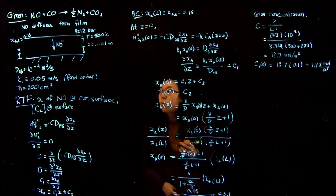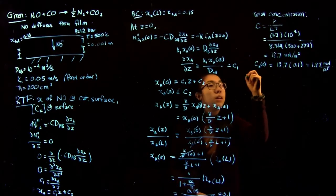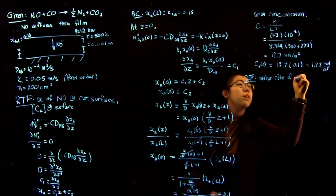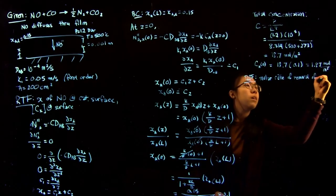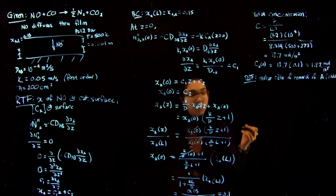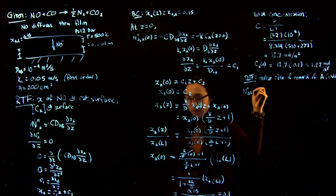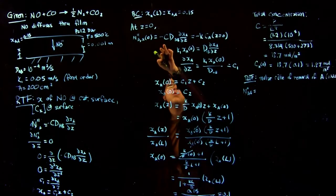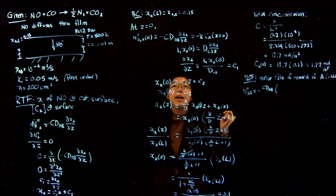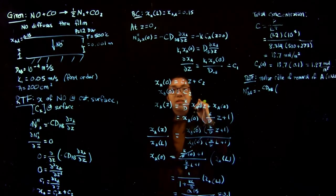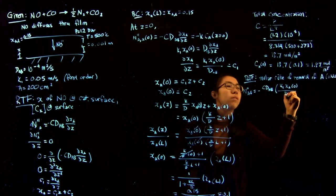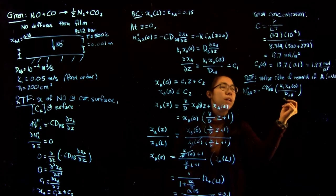The next thing we want to do is find the molar rate of removal of compound A. In order to do that, we want to find the flux at the surface, which as we know from before is equal to minus CDAB times dX by dZ, which is equal to C1, which equals K times XA at zero over DAB. The values for D cancel out.